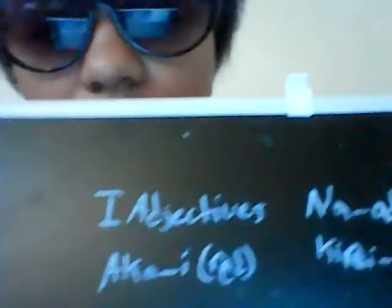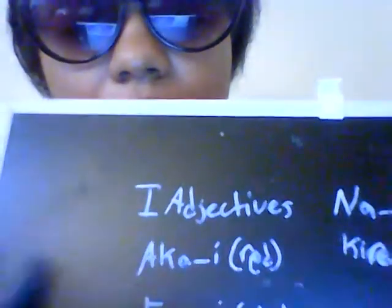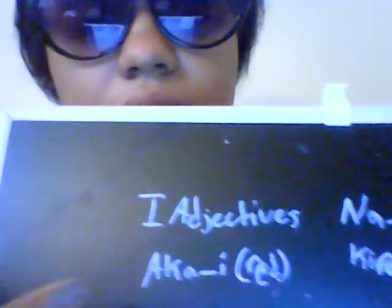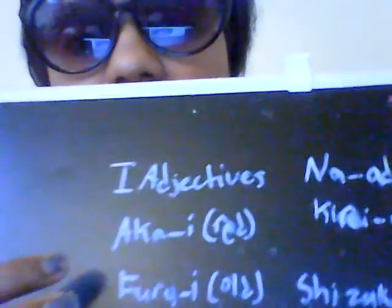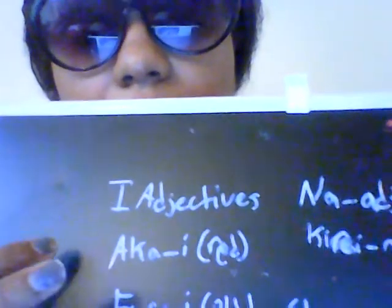Today we're going to start off with I-adjectives. You can see here — the first one is a-kai. That 'i' sounds like 'e' in Japanese, so it makes that 'e' sound: a-kai. So that would be an I-adjective.